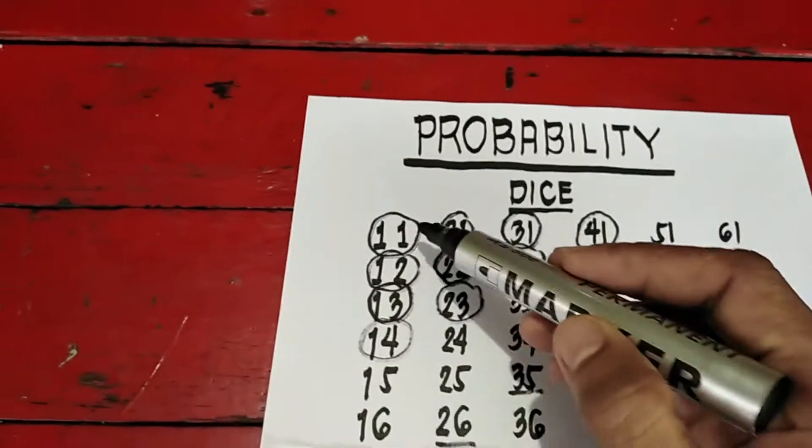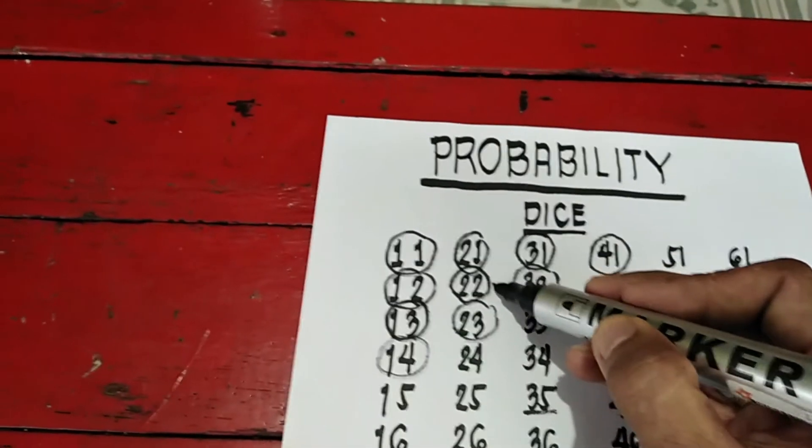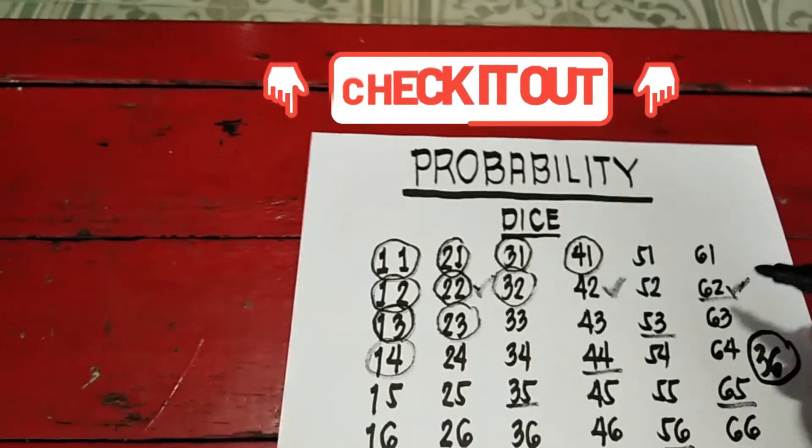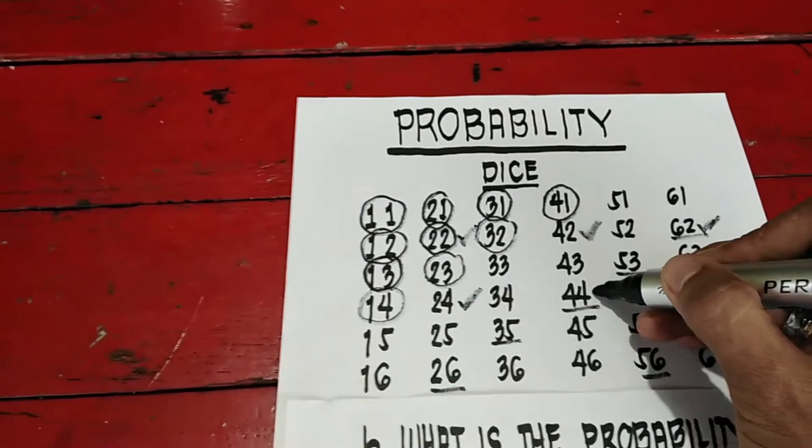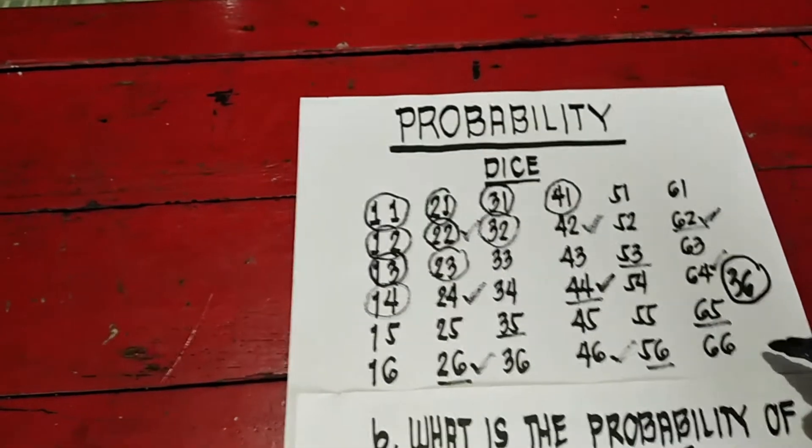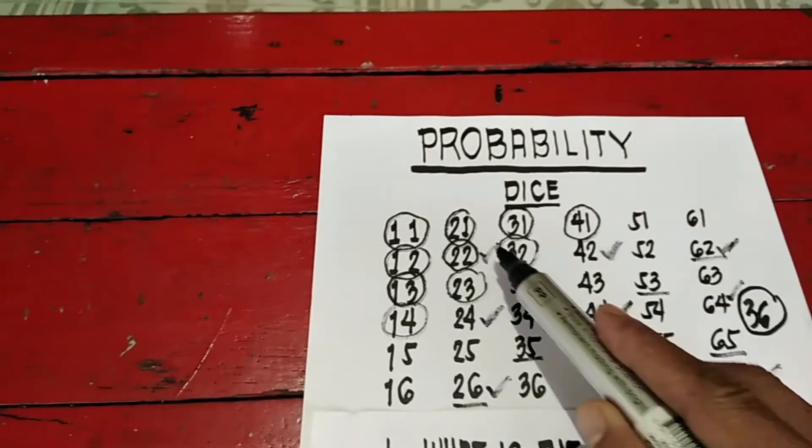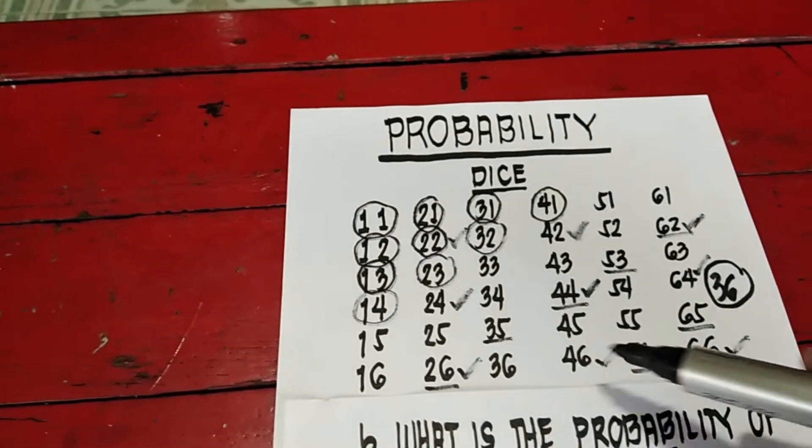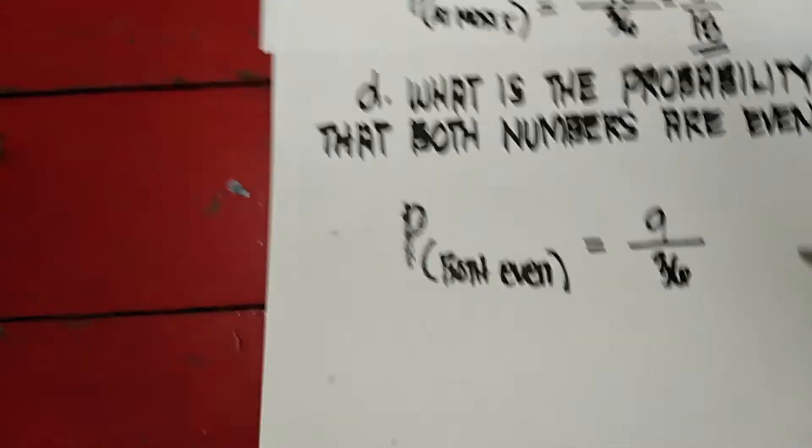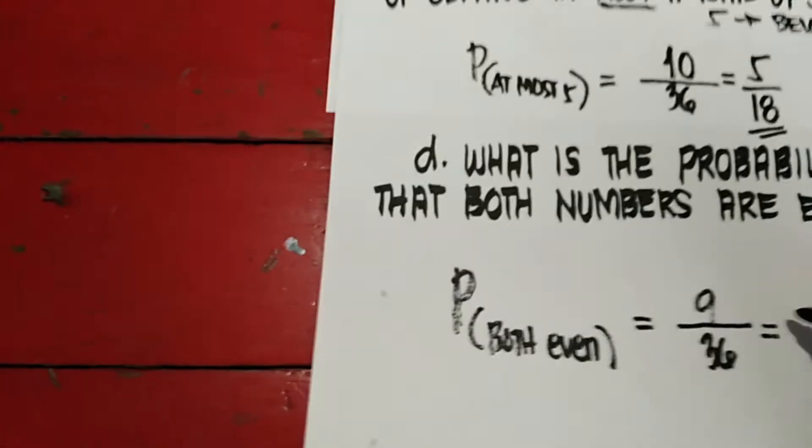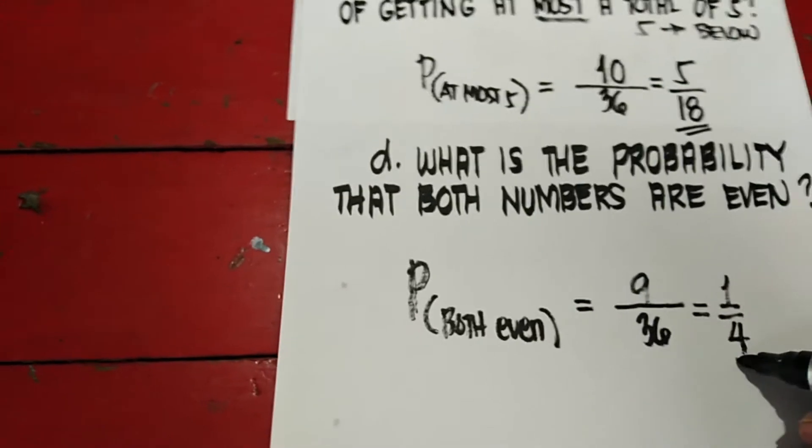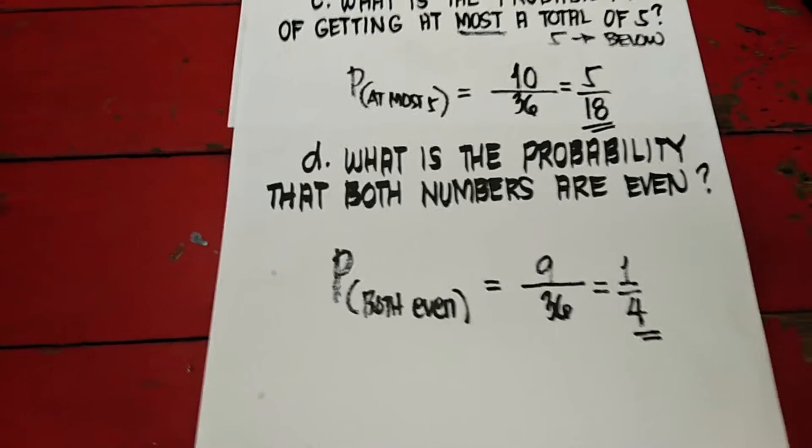Kitignan natin yung dalawang even. Ito, bawal ito kasi odd. Ito ready yan. Next is 4, 2. Next is 6, 2. 2, 4. 4, 4. 6, 4. 2, 6. 4, 6, and 6, 6. So ilan lahat? 1, 2, 3, 4, 5, 6, 7, 8, 9. Ang total natin is 9. Then lowest term natin, pwede i-divide sa 9. 9 divided by 9 is 1. 36 divided by 9 is 4. So the probability of both even numbers is 1 fourth.